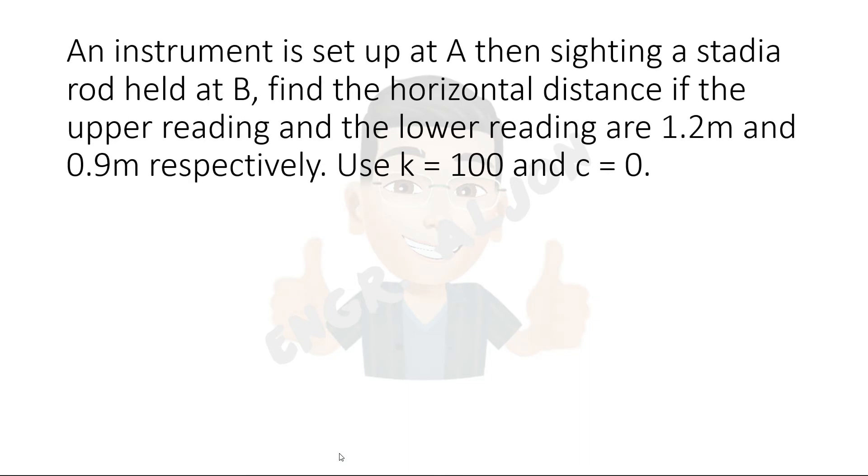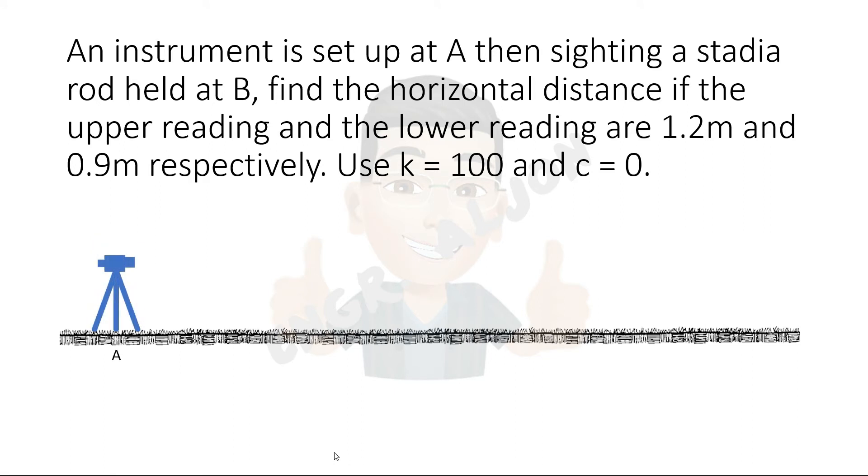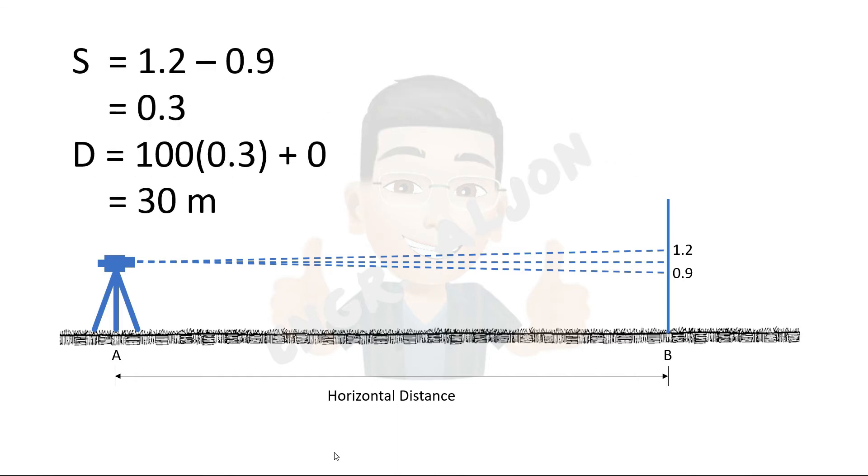Let's try and solve this problem. An instrument is set up at A, and sighting a stadia rod held at B. Find the horizontal distance if the upper reading and the lower reading are 1.2 meters and 0.9 meters respectively. K equals 100, and C equals 0. First, we get the stadia interval, which is the upper reading minus the lower reading. Then we substitute the values to the formula, we get the horizontal distance equals 30 meters.